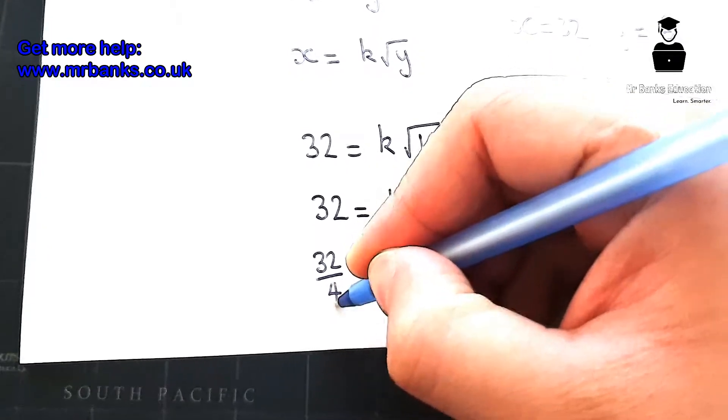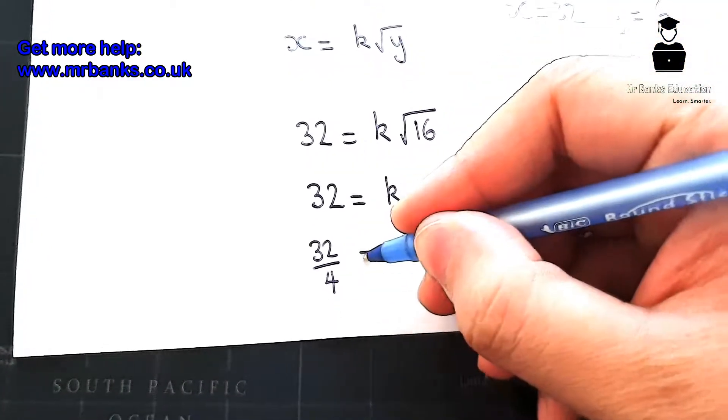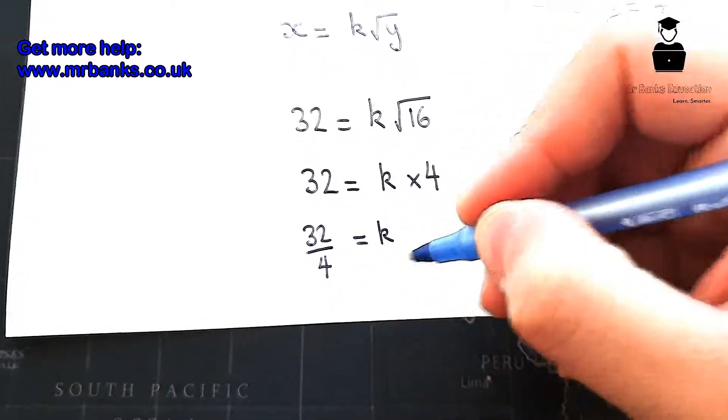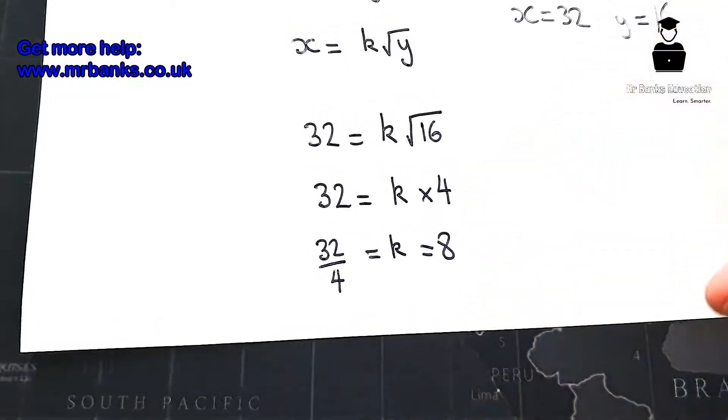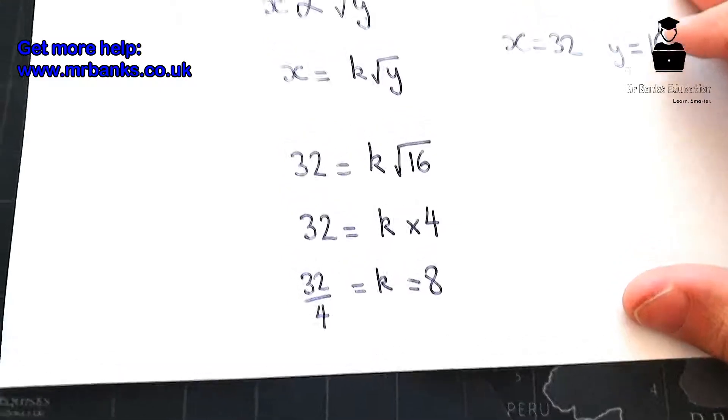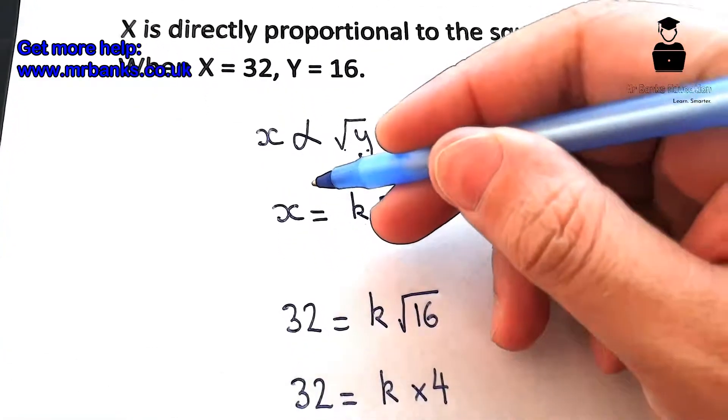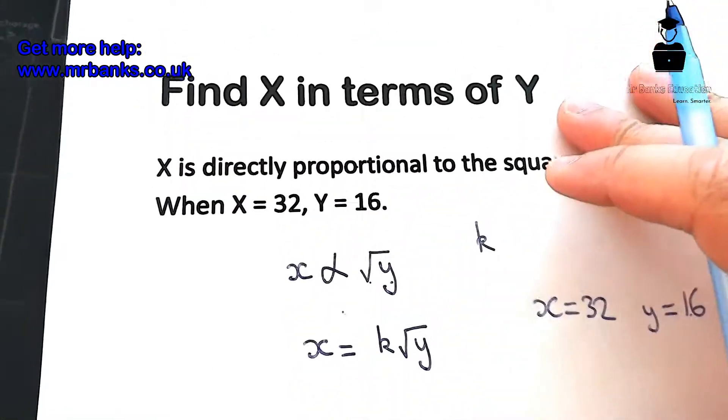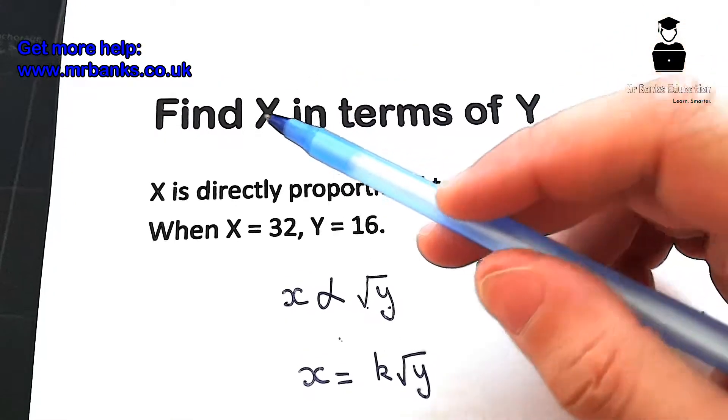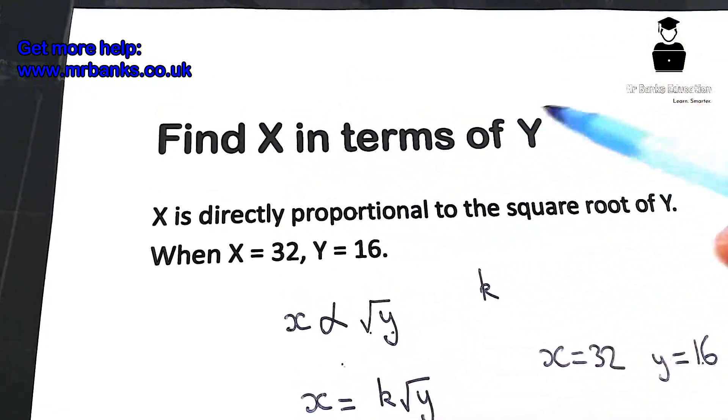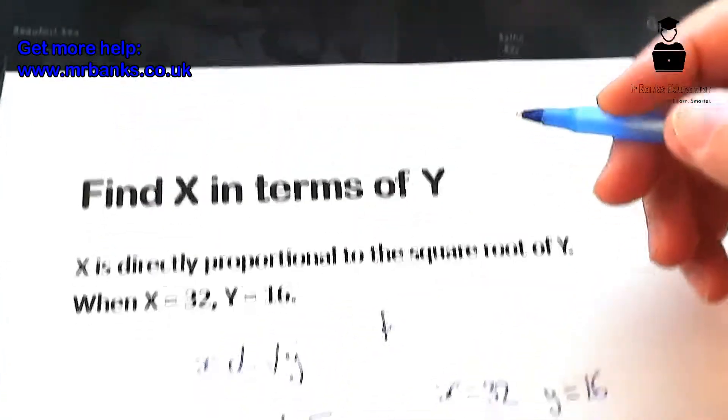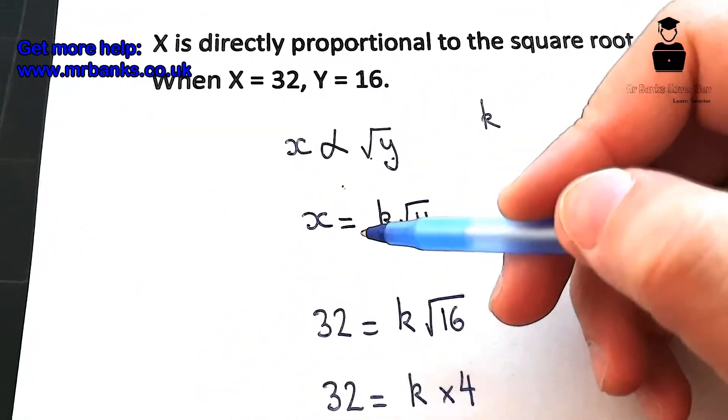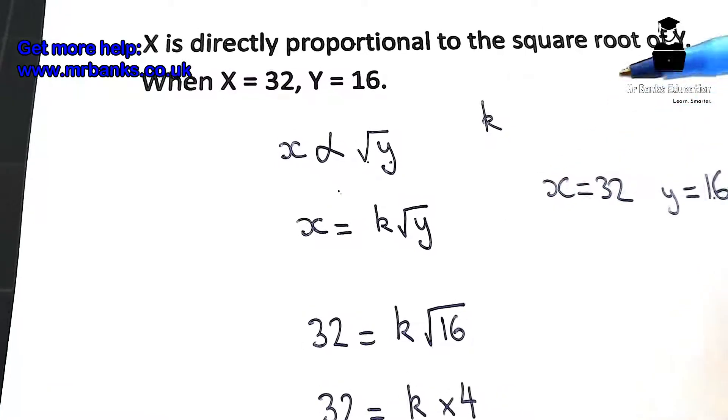So now we can go back to this thing here. If you go back to the question, it says find X in terms of Y, which basically means it's asking you to write down X equals something root Y.